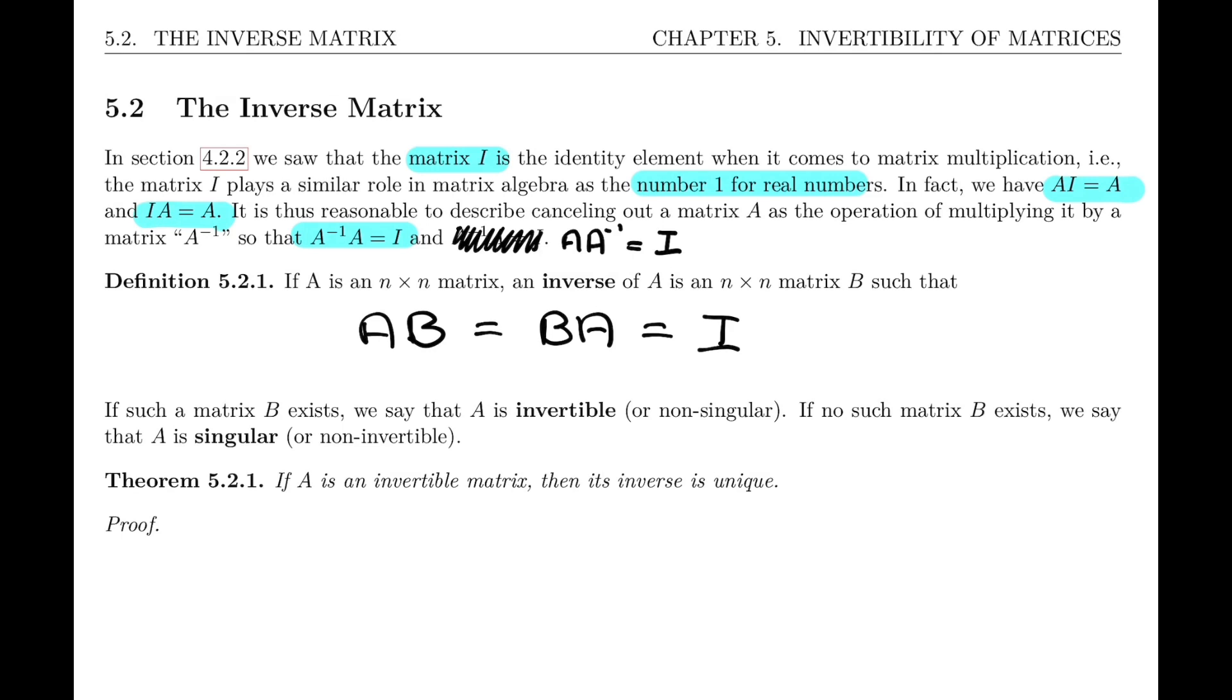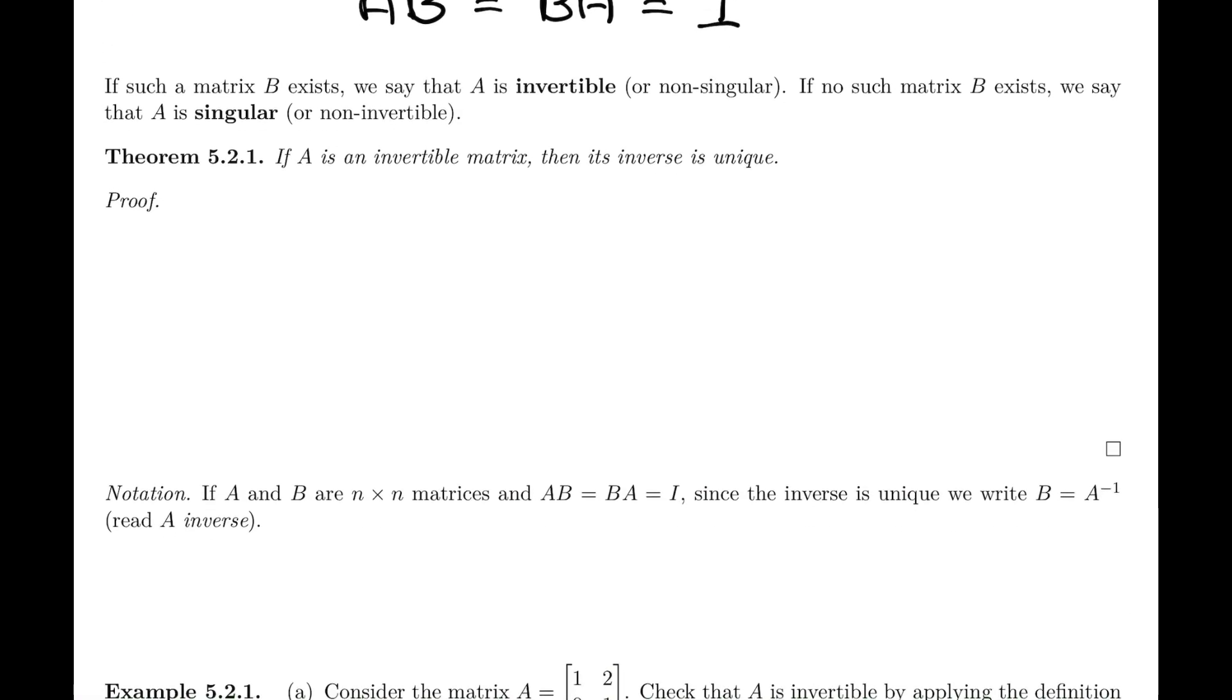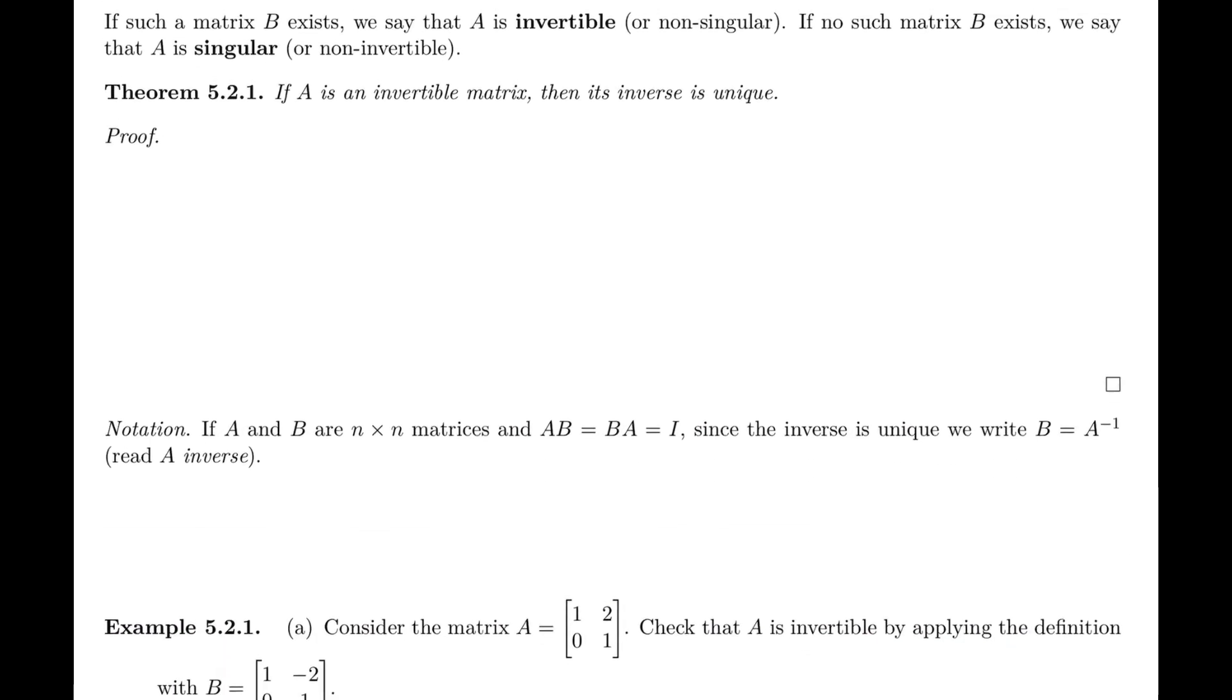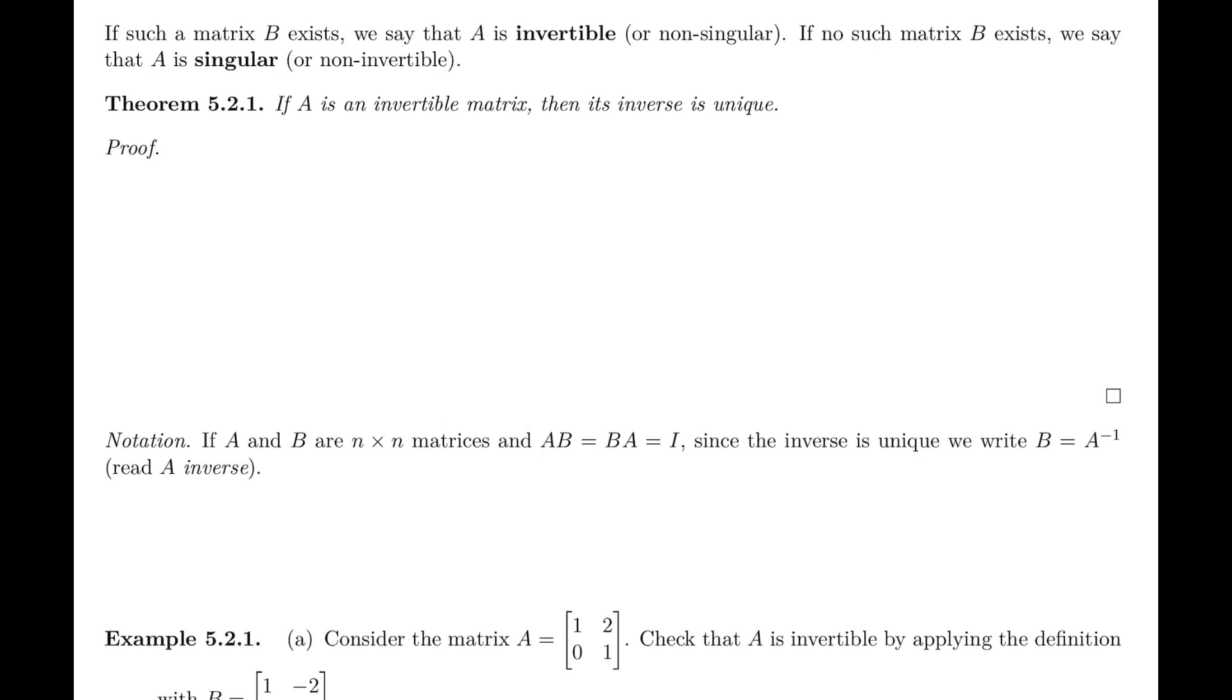Now, you notice I said an inverse matrix. But in reality, the following theorem says that if a matrix B exists that has these characteristics, then it's unique. And so if A is an invertible matrix, then its inverse is unique. And let's prove that. We can do a little formal proof of this, so that you don't have to take my word for it.